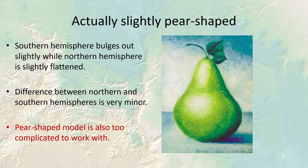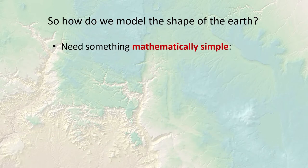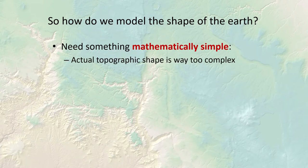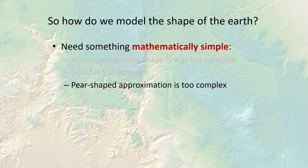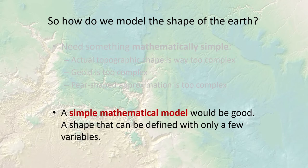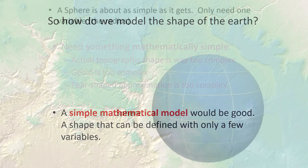The earth is actually a little bigger in the southern hemisphere than the northern hemisphere, meaning we could model it with a pear shape, but even that is complicated to work with. When the computer has to project data on the fly — just to render it on your flat monitor — it needs something really simple. Topography is too complex, the geoid is too complex, even a pear-shaped model is too complex. We need a very simple mathematical model definable with only a few variables.